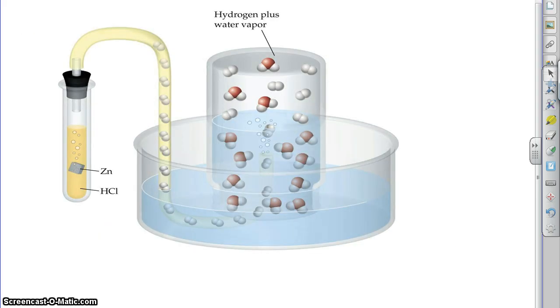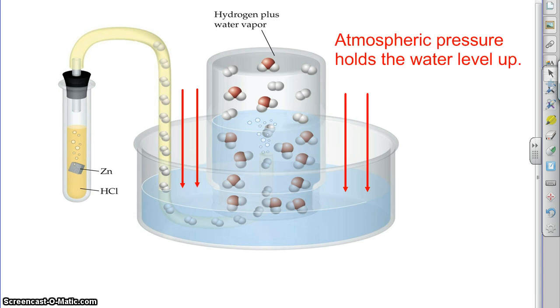Now eventually this reaction will stop, we'll stop making hydrogen, and now we're full of whatever hydrogen we have in there. We want to measure the pressure of that hydrogen. One of the things we can do that's pretty simple is we can actually look at the atmospheric pressure in the room. Because the atmospheric pressure in the room is pushing down on this water level out here causing this water to be pushed up into the chamber, up into the tube that we're collecting it in.